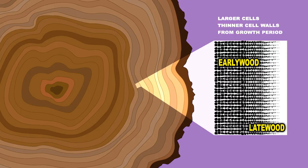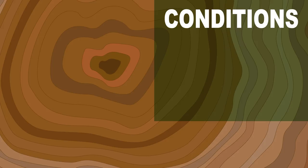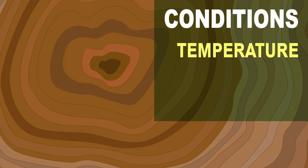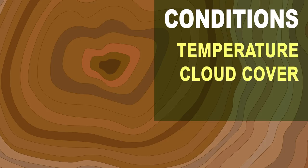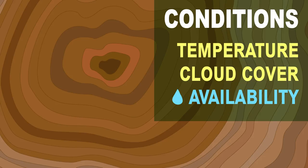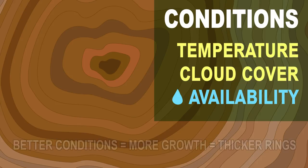These cells form during the growth period in the spring. Cells of the late wood, on the other hand, have smaller cells with thicker cell walls and are formed during the summer. The tree rings formed from these alternating layers vary in thickness, depending on each year's conditions. Better growing conditions, with the necessary temperature, cloud cover, and especially moisture availability, yield more growth and hence thicker rings.